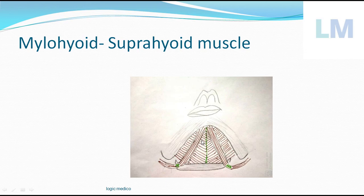So they can elevate the Hyoid bone. So when does this happen? During deglutition. That is the overall idea. So Mylohyoid is one of the Suprahyoid group of muscle.